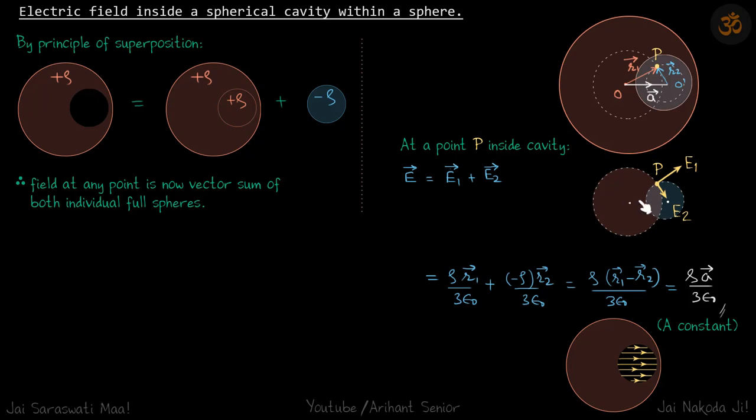So because of the first sphere, electric field will be E₁ away from it, and because of E₂ it should be towards the center of second sphere. So let's call it E₂.